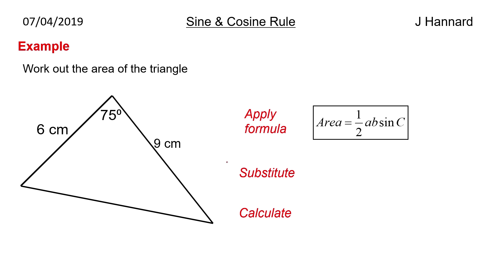Area equals a half ab sine C, so substitute that in, or substitute the numbers in, and calculate the area. Don't forget your units, centimetres squared for area of course, but there you go, that is the area. You don't need to use half base times the height with these ones, you can.